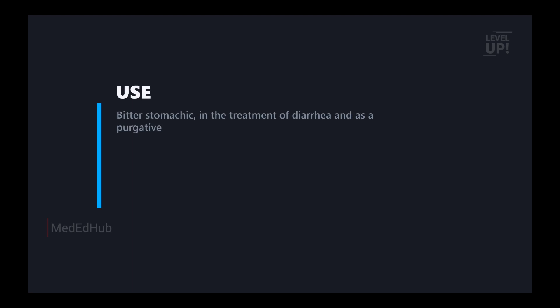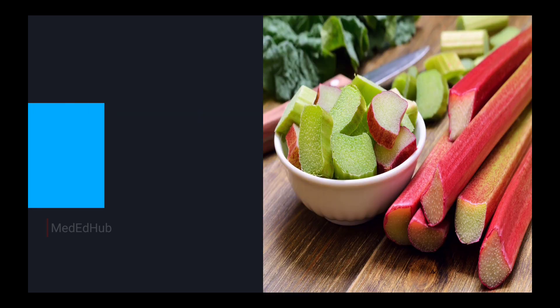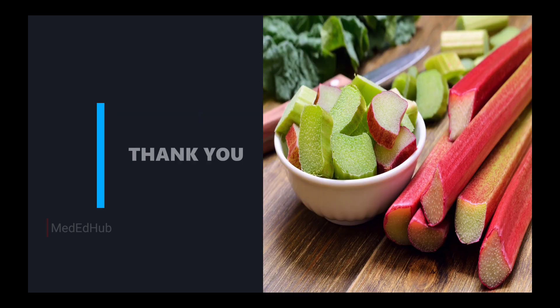If you have constipation, you can use rhubarb as a laxative, but the action is also dose-dependent. If you have a bitter or upset stomach, it acts as a stimulant and astringent. So this is rhubarb — you can use it as a laxative as well as an astringent.